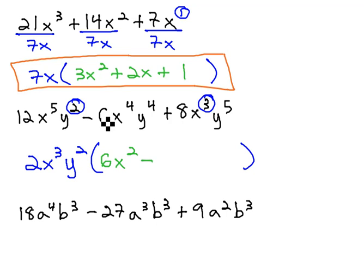Minus 6 divided by 2 is 3. x⁴ divide out x³ leaves an x behind, and y⁴ divided by y² leaves a y² behind.